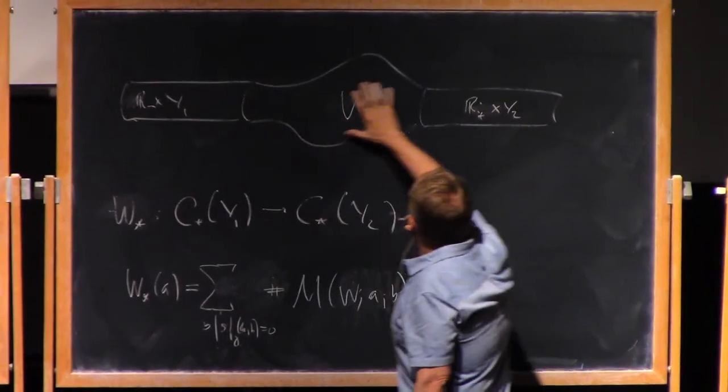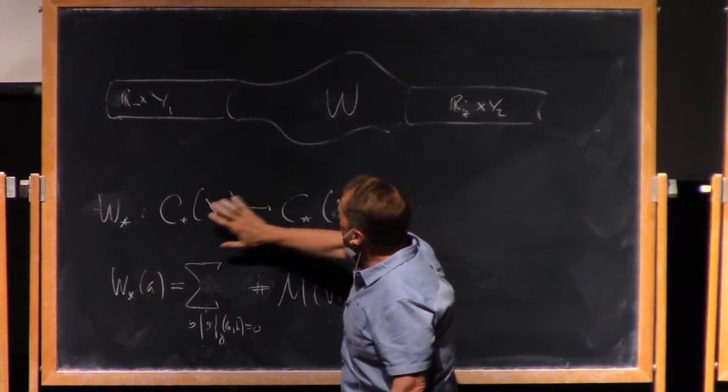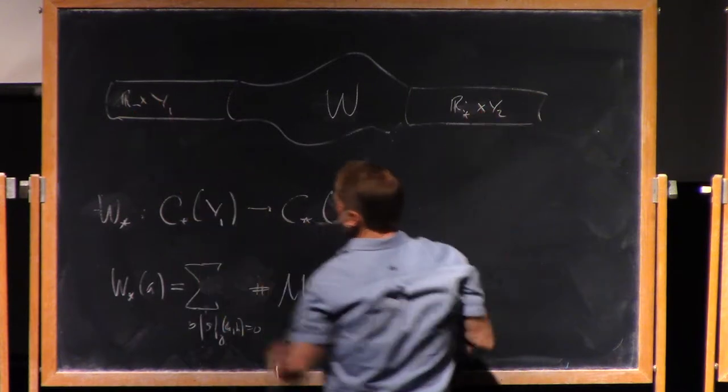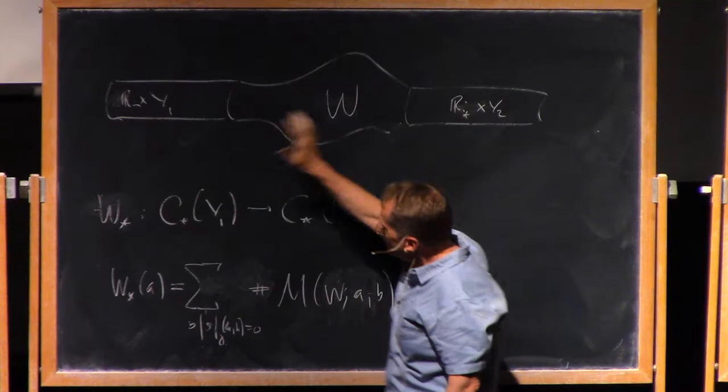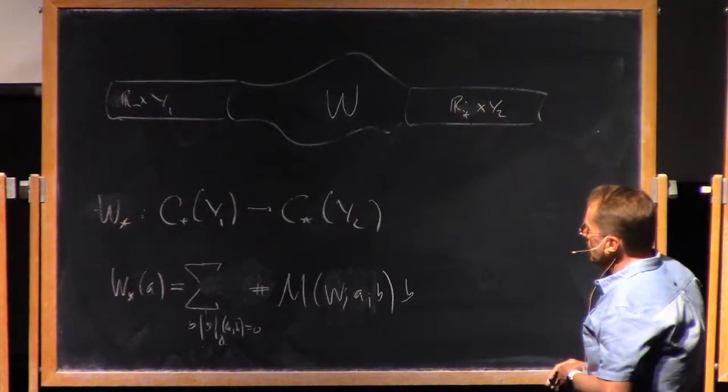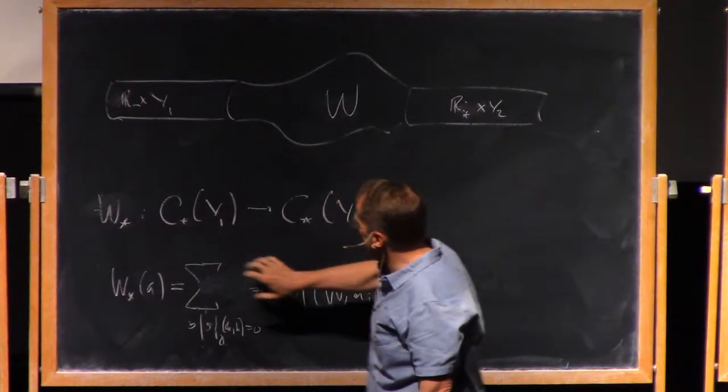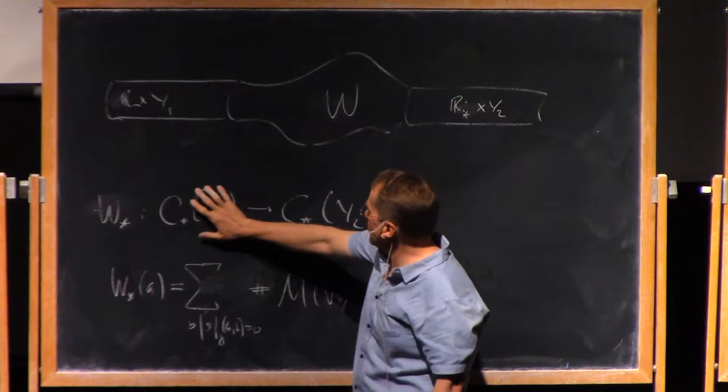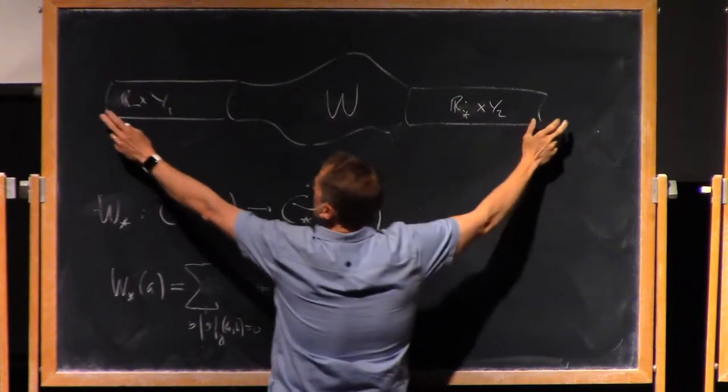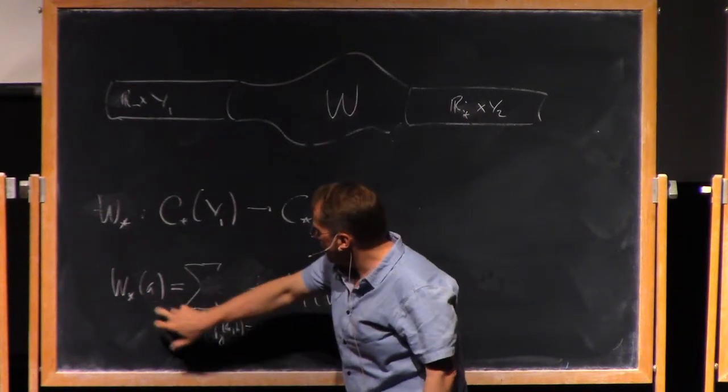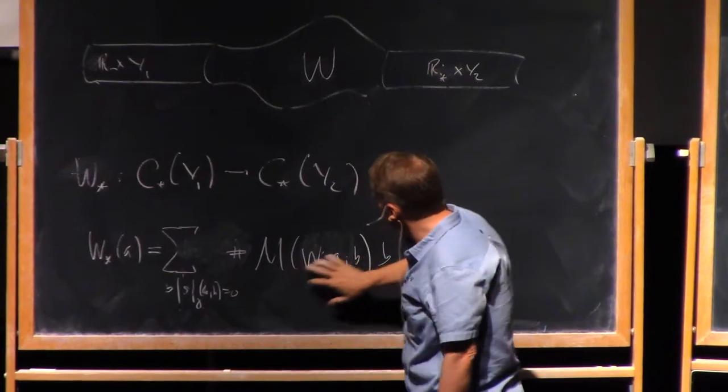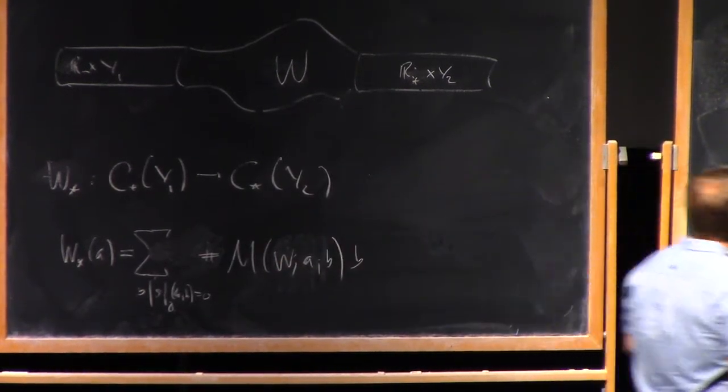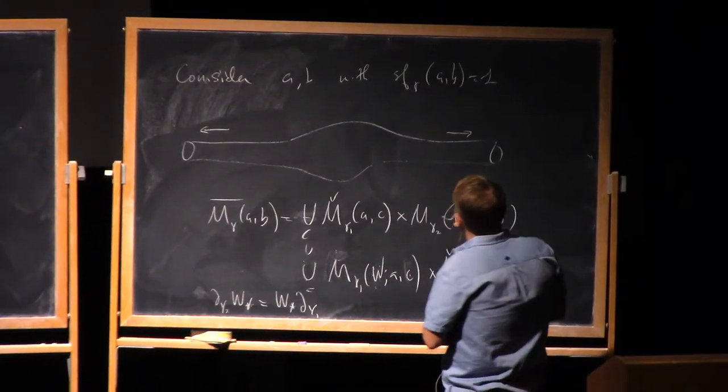So we can define maps between these chain complexes by looking at moduli spaces on, well, instead of on a cylinder, let's put some interesting cobordism between them and form this manifold with cylindrical ends. We're gonna study instantons on here. Behavior's the same. The only failure of compactness is bubbling. And then we can try and define a map, which just counts. There's no longer a translation here, because this is just some four-manifold we can't translate. So a sensible thing to try to do is just count the number of solutions between a given A and B, and then let's try and define a map. The image of A is we look at all zero-dimensional moduli spaces on this manifold, count the number of solutions that end up at B, multiply by B, and that's a map.